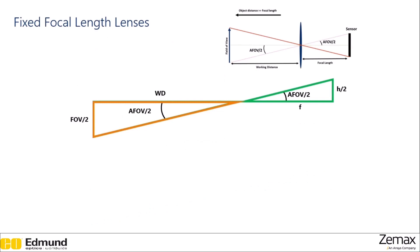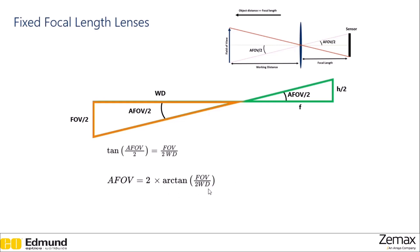Taking a look at these relationships, starting with the left triangle, using trigonometry, we can say that the tangent of the angle is equal to the opposite side over the adjacent side. So the tangent of the half angular field of view is equal to the field of view over two times the working distance. We could solve this for the angular field of view: the angular field of view is two times the inverse tangent of the field of view over two times the working distance. Similarly, for the triangle on the right, the tangent of the angular field of view over two is equal to the height of the sensor divided by two times the focal length. Solving for the angular field of view: it is equal to two times the inverse tangent of the height of the sensor over two times the focal length.